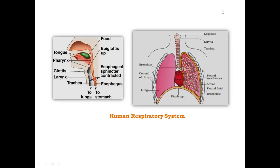There is a pair of external nostrils, through which air enters and passes through the nasal passage or nasal chamber. The pharynx is the common passage for both food and air.